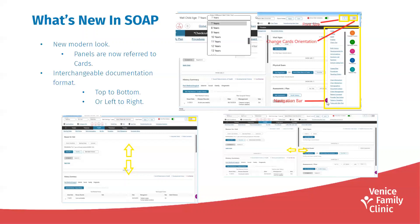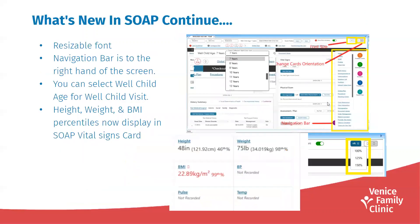You can also select the well child age for the well child visit. For example, if you have a patient that is six months old but they missed their four-month well child check, you can update that age to reflect the four-month well child age.